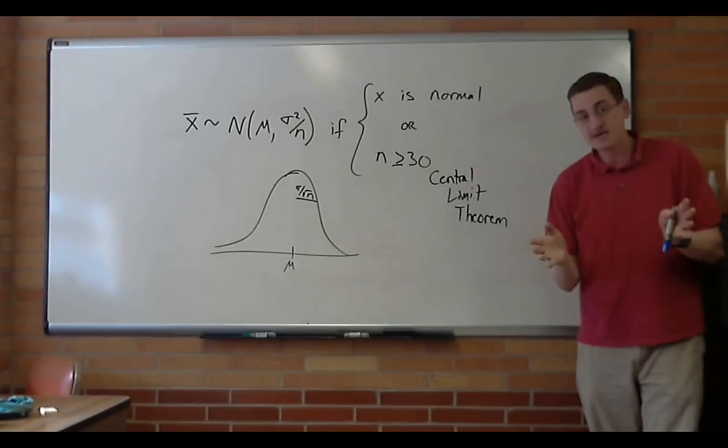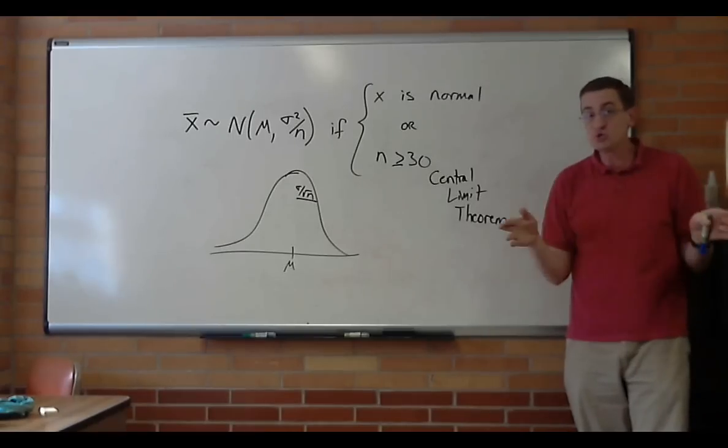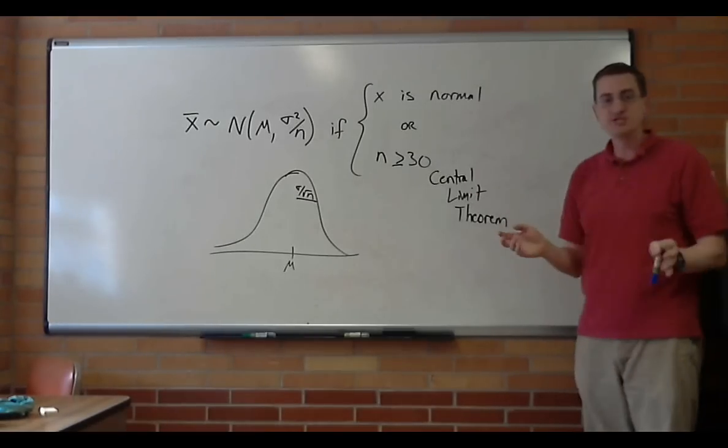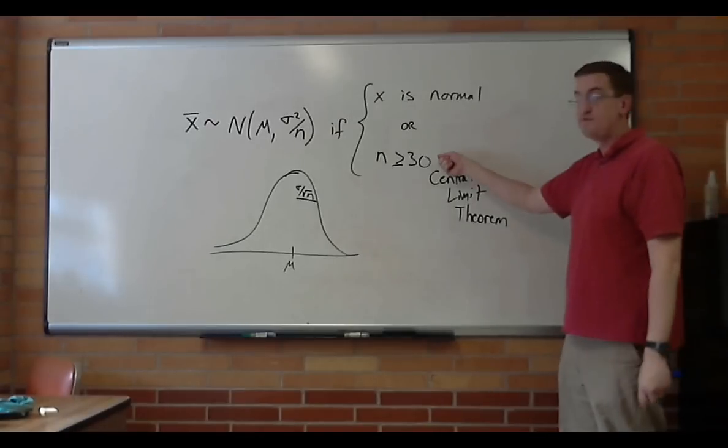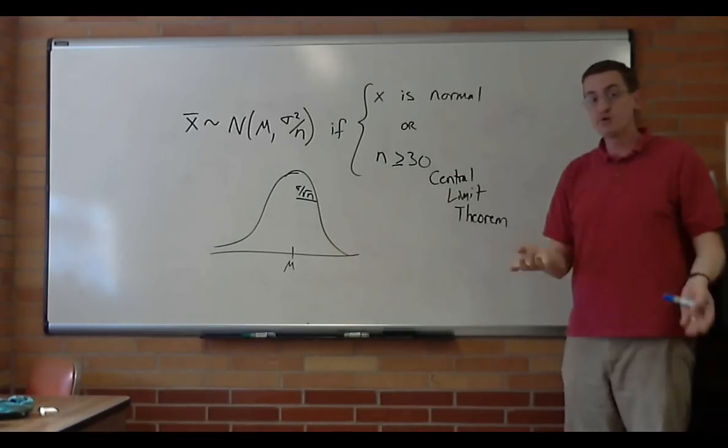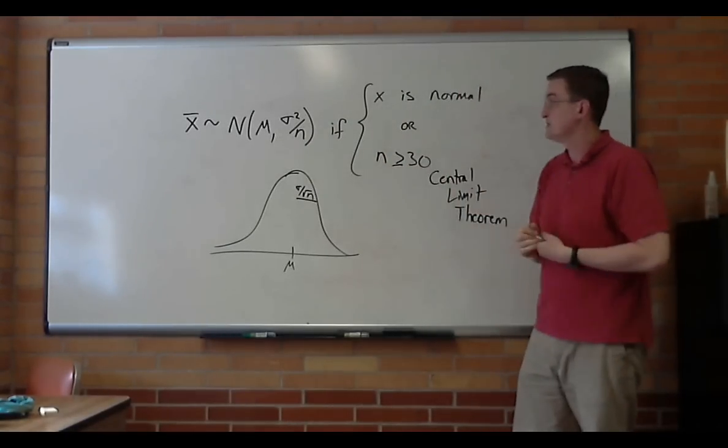So I showed you with a picture how it seems to look normal-ish. Central Limit Theorem actually says the math behind it is right. You can get away with this. So if your sample size is large enough, then it approaches a normal distribution, or if it was normal to start with.